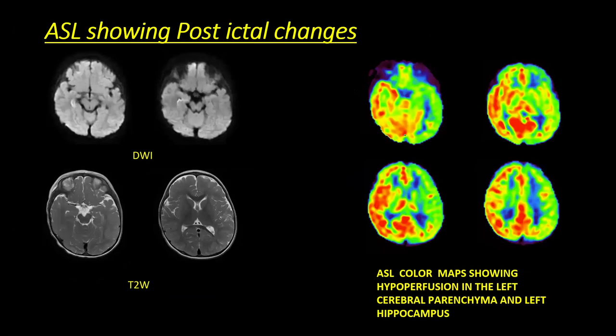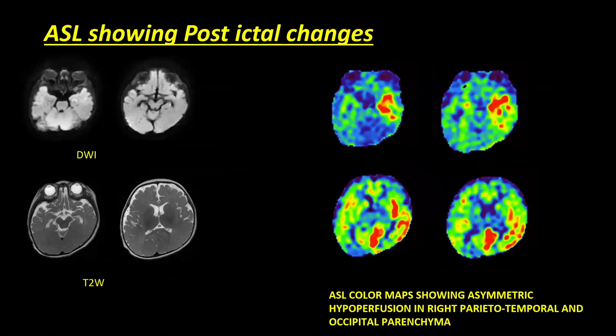Another example: diffusion and T2-weighted images look almost normal, but on ASL color maps there is a clear difference between the right and left, with hypoperfusion in the left cerebral parenchyma representing post-ictal change. Another example from the pediatric age group — T2 and diffusion normal, but ASL showing clear hypoperfusion on the right, which also correlated with the ictal focus on EEG.